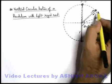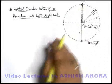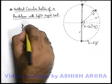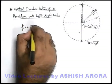And in case of a string, the bob will never be able to reach the topmost position. So we can say if u is equal to root 4gl,